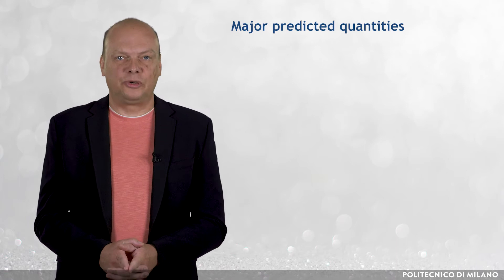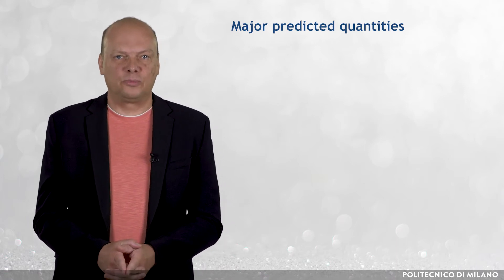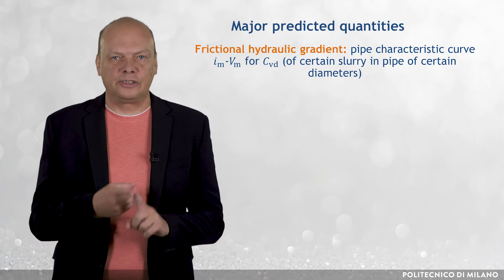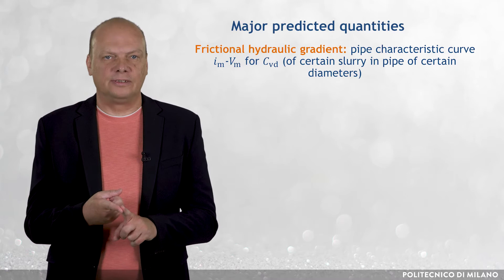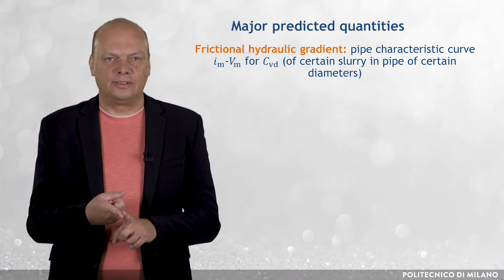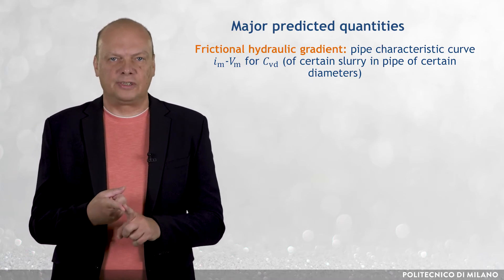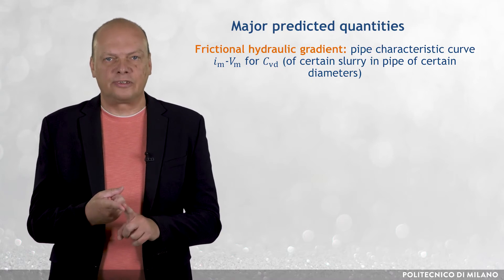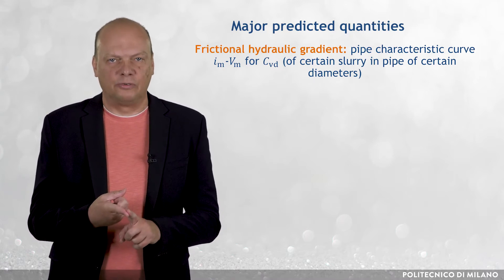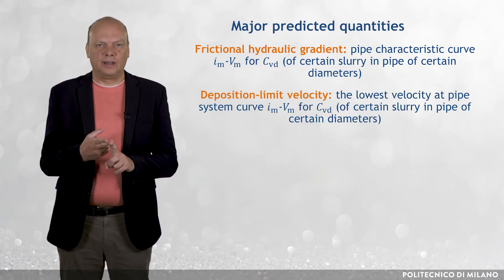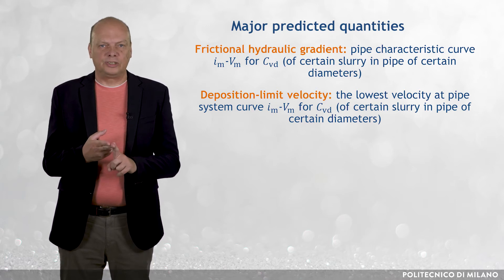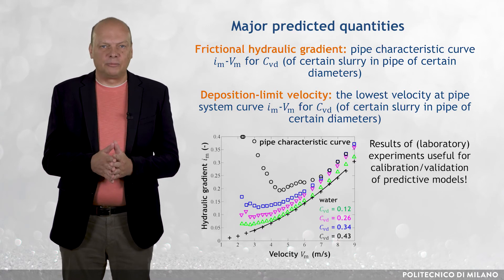There are two major predicted quantities for transport system design and operation. The first one is the frictional hydraulic gradient as a function of flow velocity, which gives a pipe characteristic curve for a certain slurry in a pipe of a certain diameter. The second one is the deposition limit velocity, which is the lowest velocity at which the pipeline system should be operated.